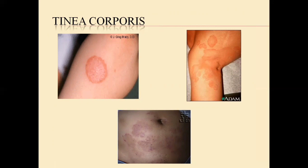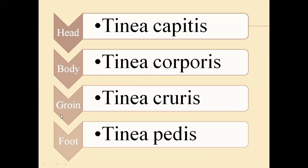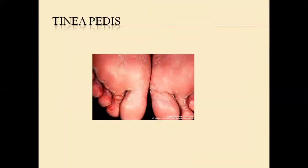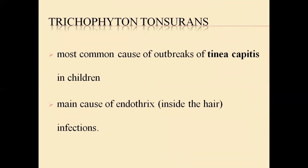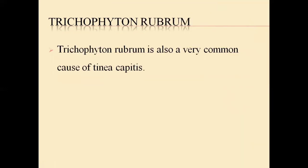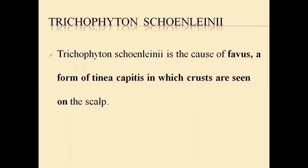Tinea cruris appears on the groin area. For tinea capitis, there are three species most specifically involved: Trichophyton tonsurans, which is very common in children and causes infection inside the hair. Then Trichophyton rubrum, which is another species involved in tinea capitis and is also very common in children. And then we have Trichophyton violaceum, which is also one of the causes for tinea capitis — these are the most common infections affecting the head region.